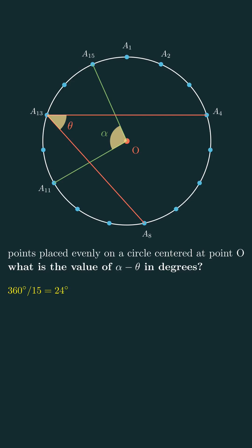Now the angle alpha is a central angle, and it spans four small arcs. So both the arc and the angle measure 24 times 4 equals 96 degrees.